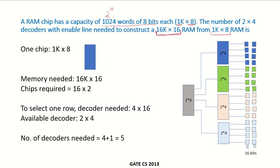This is what we have to find out, how many decoders would be required. We are given that we have RAM chips and the capacity of each chip is 1K by 8. That means there are 1024 rows like this and each row is having 8 bits. This is how each chip looks like, 1K cross 8, 8 bits. There are 8 bits in each row.